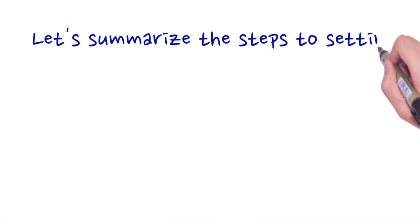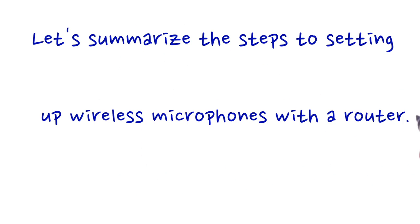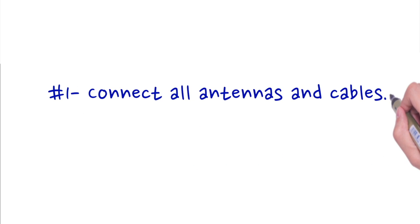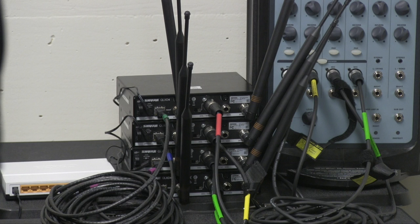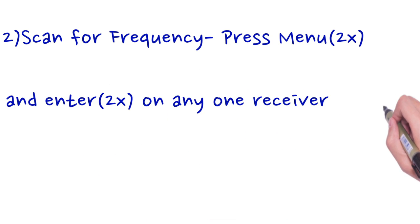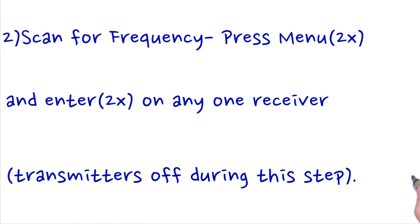Let's summarize the steps to setting up wireless microphones with the router. Connect all antennas and cables. Scan for frequency - press menu twice and enter twice on any one receiver. Transmitters off during this step.